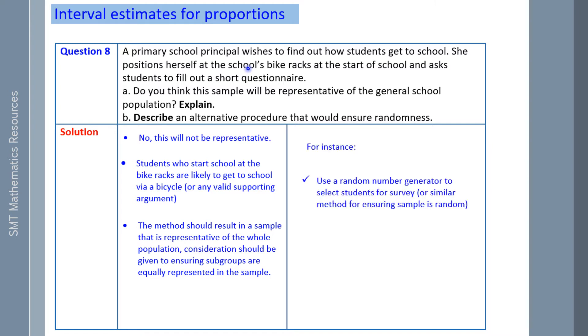For instance, use a random number generator to select students for a survey. If you ensure that proportions of boys and girls reflect the proportions in the population, these are some ways that we can make it a lot more representative of the school population.